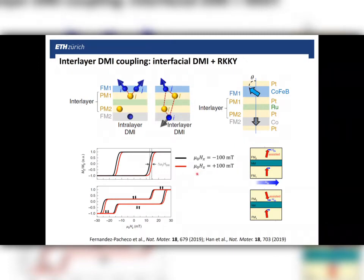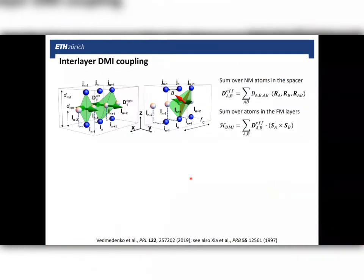There is a canting angle between the magnetizations, and this canting angle affects the magnetization reversal, especially when combining an out-of-plane field with an in-plane field that either favors or inhibits the DMI preferred direction. In general, this interlayer DMI coupling can also occur between two ferromagnetic layers separated by a single spacer, without needing a ruthenium spacer to promote RKKY coupling. This was shown theoretically early on by Keixia et al. back in 1997.